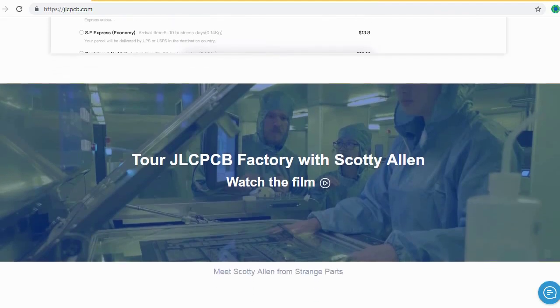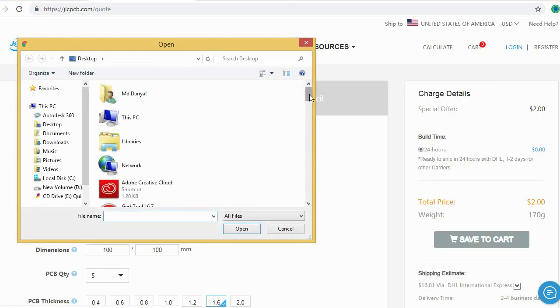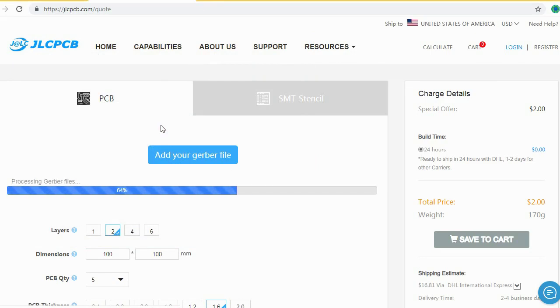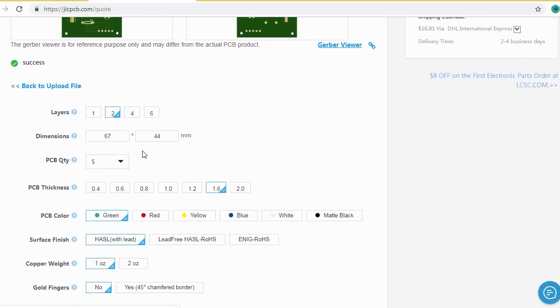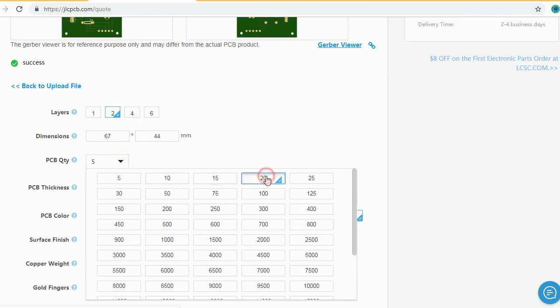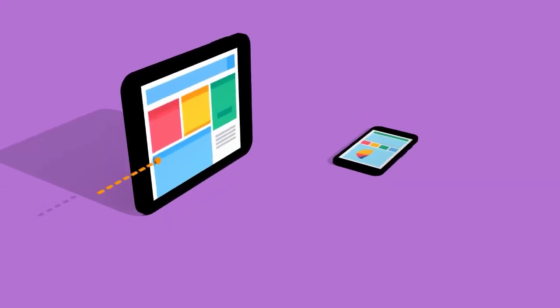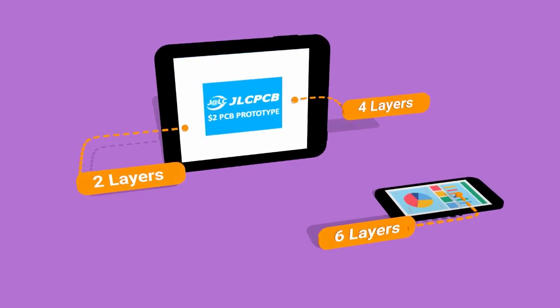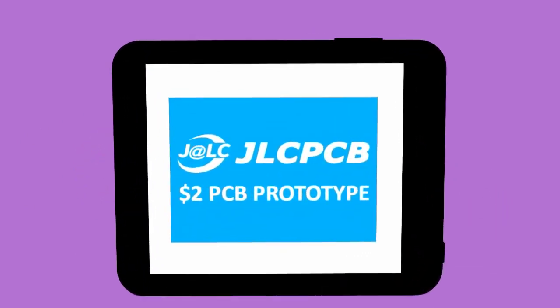You should just create your Gerber file and upload to JLCPCB. Here you can order your high quality PCB at a very cheap price. After that you should just select your desired PCB color from different colors and select the quantity of your PCB. Here you can order two layers, four layers and six layers of PCB at a very cheap price, just two dollars.